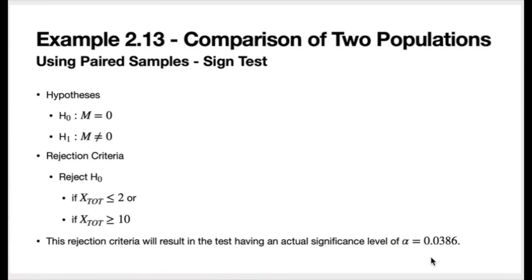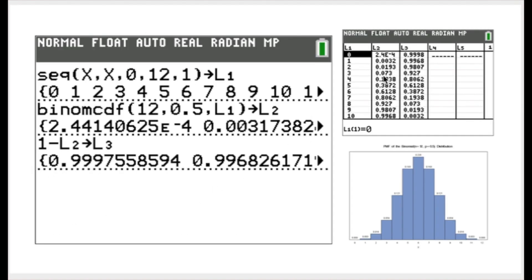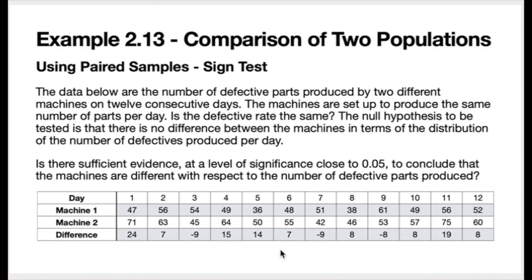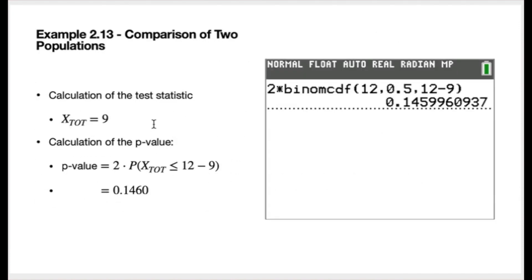Looking at the differences, X-tote counts the number of positive differences. Counting them: 1, 2, 3, 4, 5, 6, 7, 8, 9 — so the test statistic equals 9. The p-value for this test is 2 times the probability that X-tote is less than or equal to n minus X-tote, or 12 minus 9, which is less than or equal to 3. That p-value is 0.146.